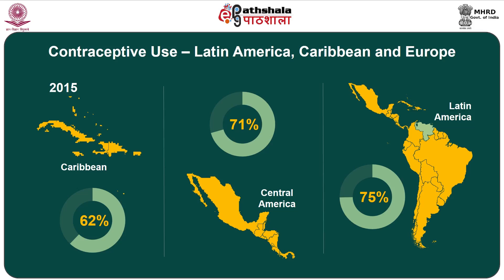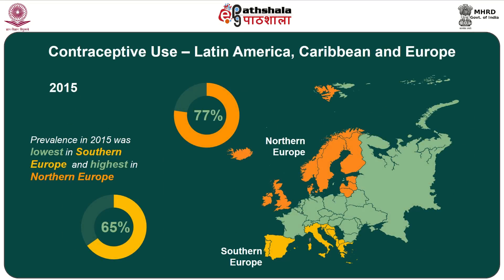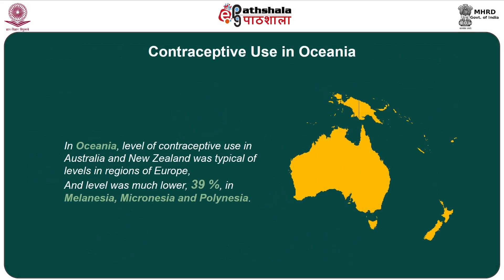Regional contrasts are smaller in Latin America and the Caribbean, though contraceptive use was lower in the Caribbean at 62 percent than in Central America at 71 percent and South America at 75 percent. Within Europe, prevalence was lowest in Southern Europe at 65 percent and highest in Northern Europe at 77 percent. In Oceania, the level of contraceptive use in Australia and New Zealand was typical of the 70 percent levels seen in Europe, while prevalence was much lower in Melanesia, Micronesia, and Polynesia.